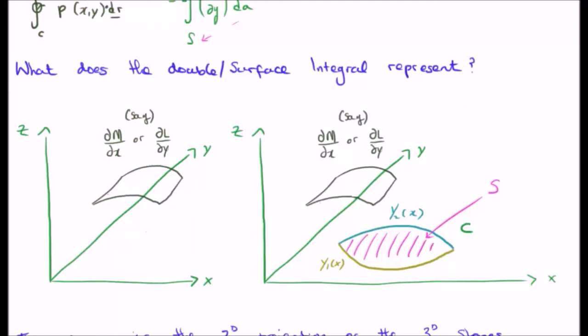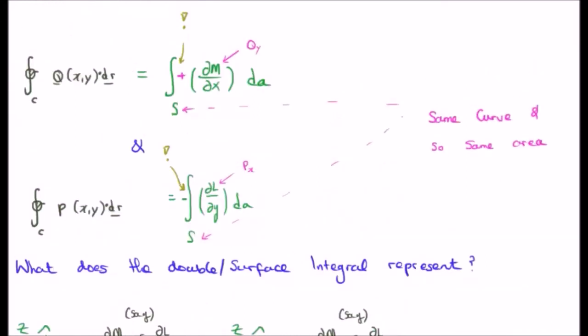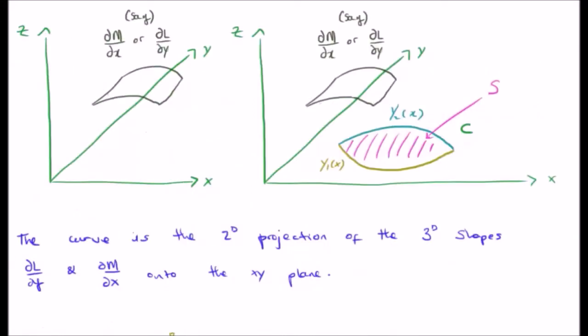So we had x and y, which gives you a height above the xy plane. The projection of this particular function onto the xy plane is going to be the surface s. And the surface s is the same for both of the integrals which we've seen above. The point is that the curve is the two dimensional projection of the 3D shapes del l del y and del m del x onto the xy plane.